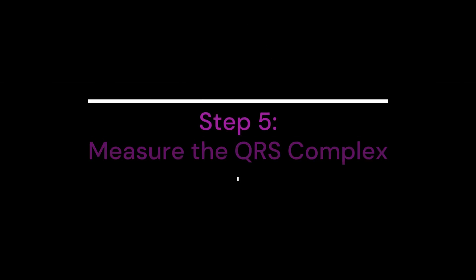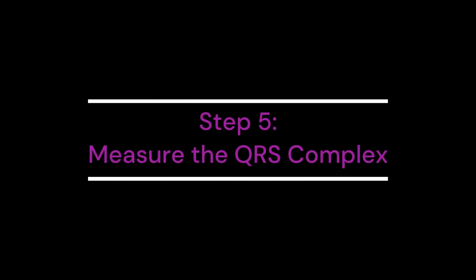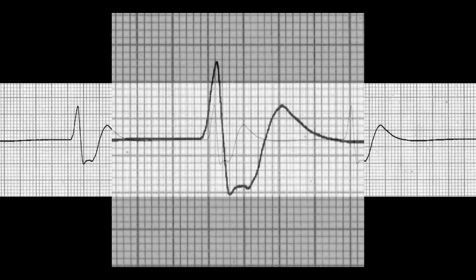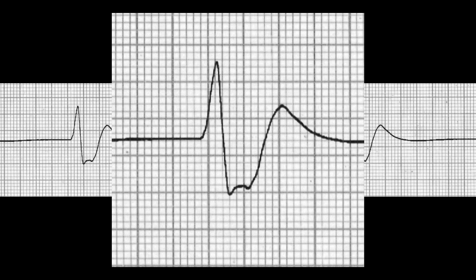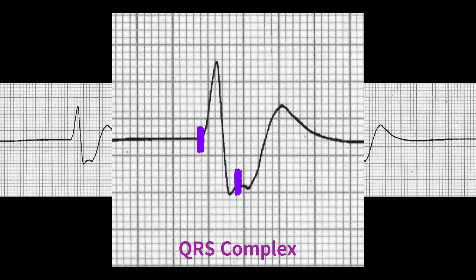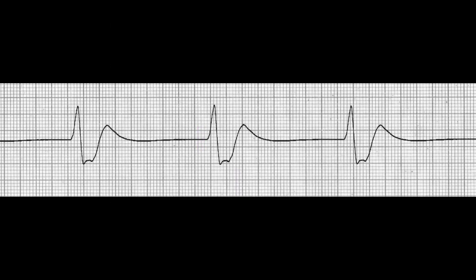Step 5: Measure the QRS Complex. Idioventricular rhythm appears with wide QRS complexes, usually measuring greater than 0.12 seconds, giving the QRS complex a somewhat bizarre appearance. This is a hallmark finding of idioventricular rhythm.